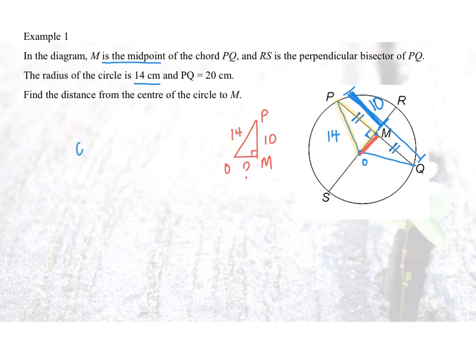So OM will be equal to square root of the hypotenuse squared minus 10 squared. And that will give us an answer of 9.79795. So estimated 9.80cm. Do you get the answer?